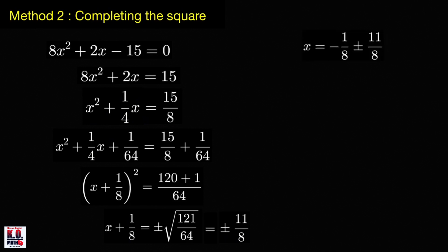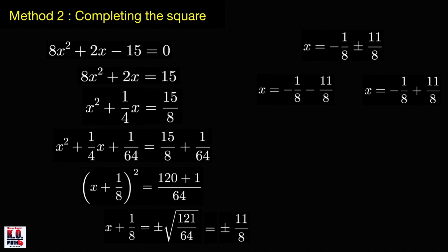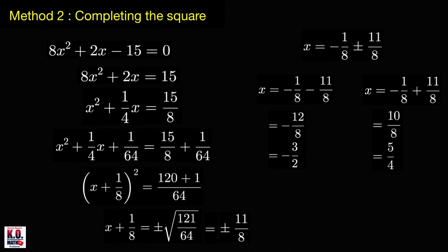So x equals negative 1/8 plus or minus 11/8. The two values of x are: x equals negative 1/8 minus 11/8, which is negative 12/8, equal to negative 3 halves; and x equals negative 1/8 plus 11/8, which is 10/8, equal to 5 over 4. Our answer is consistent with the result of the first method.